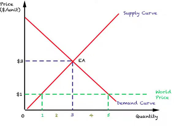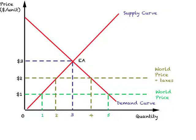Now once the country has started engaging in foreign trade, what happens when the government imposes a tax on imports? Under free trade the relevant price for this economy is $1 per unit. Now the government decides to impose a uniform tax of $1 per unit imported into this country, so the price that becomes relevant for domestic consumers as well as sellers is the world price plus the tax — that is $2. This world price plus tax is now the relevant price for economic agents in this country.